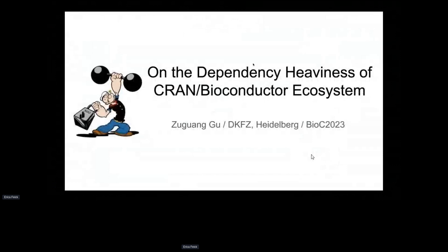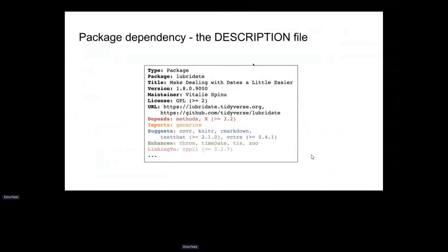The next talk is about analysis of package dependencies in the R and Bioconductor ecosystem. In the DESCRIPTION file of an R package, dependency packages are listed in the Depends, Imports, Suggests, Enhances, and LinkingTo fields.